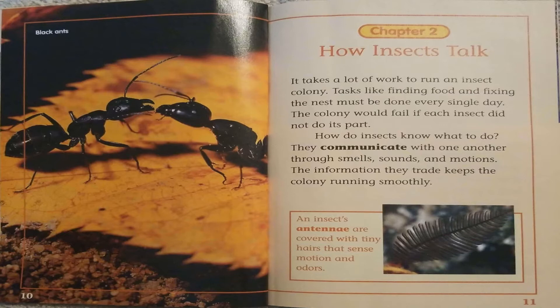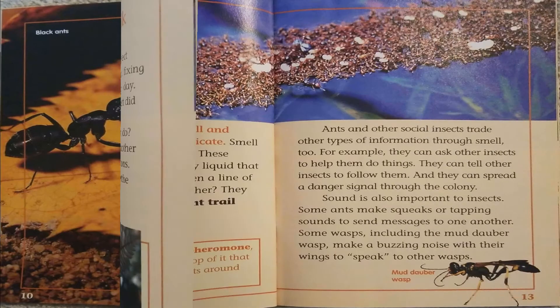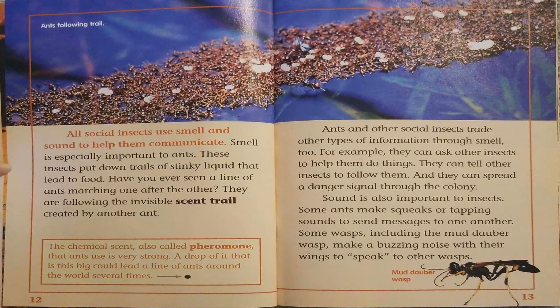An insect's antennae are covered with tiny hairs that sense motion and odors. All social insects use smell and sound to help them communicate. Smell is especially important to ants. These insects put down trails of stinky liquid that lead to food. Have you ever seen a line of ants marching one after the other? They are following the invisible scent trail created by another ant. The chemical scent, also called pheromone, that ants use is very strong. A drop of it could lead a line of ants around the world several times.